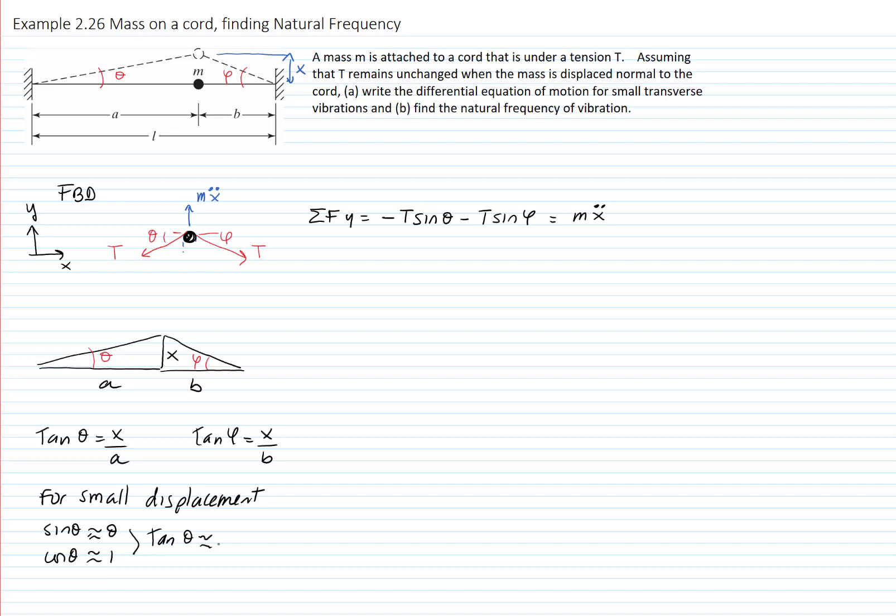Therefore, the tangent, which is sine over cosine, can also be approximated to theta. So sine of theta is very similar to tangent of theta, which is very similar to theta. Let's substitute here sine by the value we got for tangent. And then we get this expression right here. We can rewrite the expression as T that multiplies 1 over A plus 1 over B, times X. That's equal to zero. That will be my equivalent mass. This will be my equivalent constant of the spring. And with that, I can write the natural frequency.